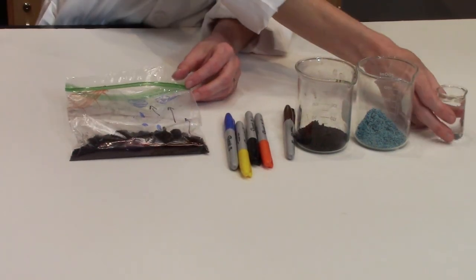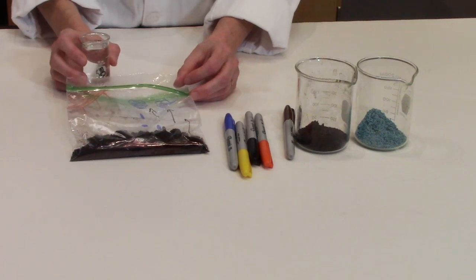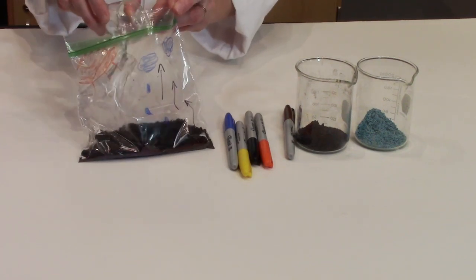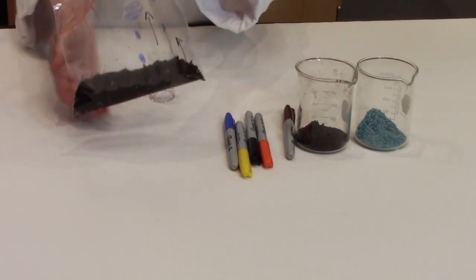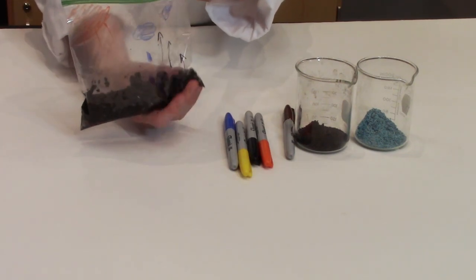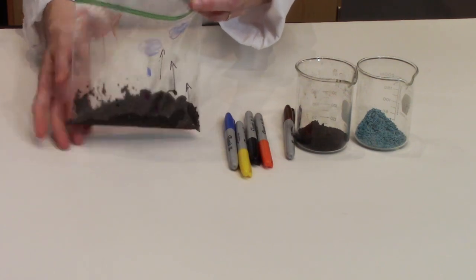Now to that we need to add some water. We want to make the soil wet, but we don't want it dripping wet. So I'm going to add some water, shake it, squish it up just a little bit. All right, there we go. Looks pretty good.